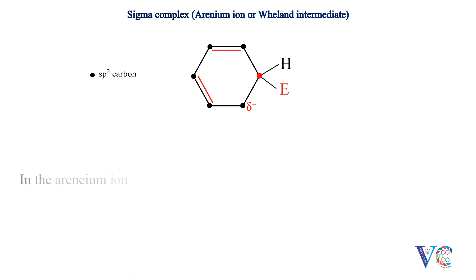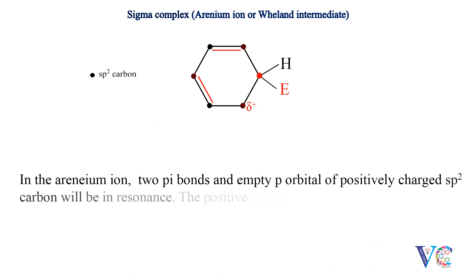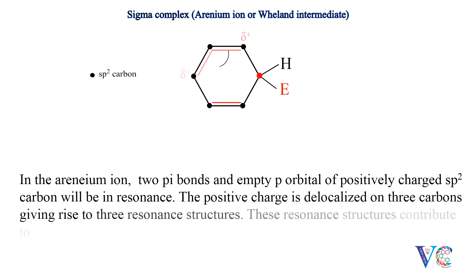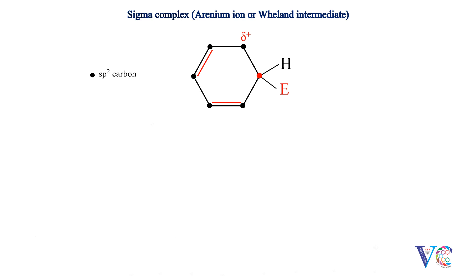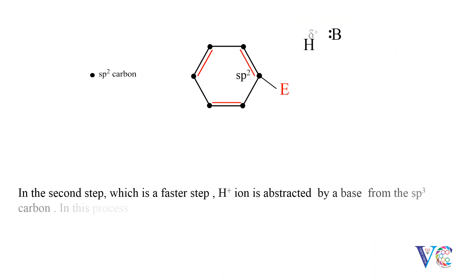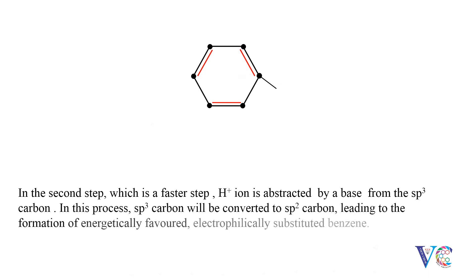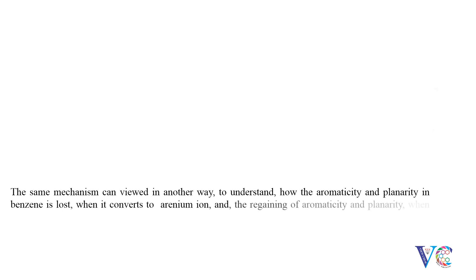In the arenium ion, two pi bonds and the empty p orbital of the positively charged sp2 carbon will be in resonance. The positive charge is delocalized on three carbon atoms, giving rise to three resonance structures. These resonance structures contribute to the stability of the arenium ion to some extent. In the second step, which is a faster step, H+ ion is abstracted by a base from the sp3 carbon. In this process, sp3 carbon will be converted to sp2 carbon, leading to the formation of energetically favored electrophilically substituted benzene. The same mechanism can be viewed in another way to understand how the aromaticity and planarity in benzene is lost when it converts to an arenium ion, and the regaining of aromaticity and planarity when the electrophilically substituted benzene is formed.